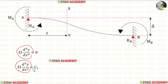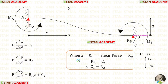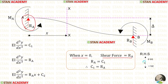On the other side, we will have the constant. EI d³y/dx³ is the shear force. When x is 0, the shear force is RA. Since RA is acting upwards, it will be positive.